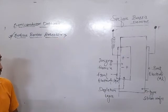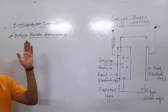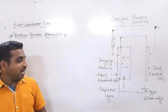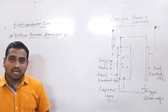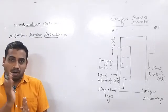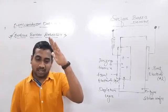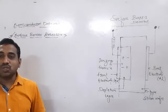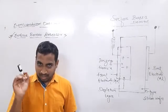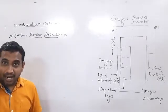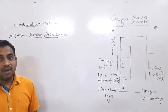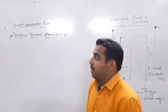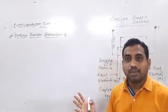First of all, just overlook the diagrams — the fabrication of the surface barrier diodes. The fabrication of a surface barrier diode is very much easier than that of NP junctions which is made in the previous type, that is the diffused junction detector. So it is very easy to fabricate these surface barrier detectors.